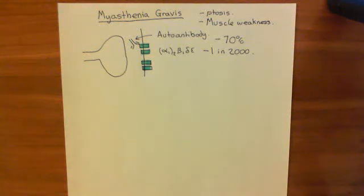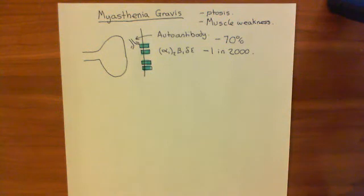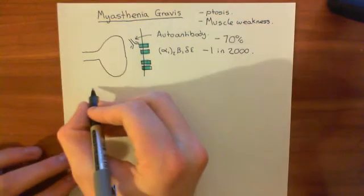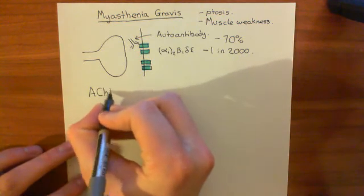Welcome to this next video in which we're discussing acetylcholinesterases and acetylcholinesterase inhibitors. We've now discussed acetylcholinesterase enzymes and myasthenia gravis, our clinical case where we'd really like to inhibit the acetylcholinesterase enzyme. Now let's discuss the drugs which actually do it — acetylcholinesterase inhibitors, AChE inhibitors.